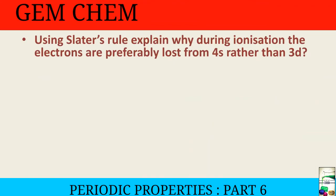Now here is a question: using Slater's rule, explain why during ionization electrons are preferably lost from 4s rather than 3d. We will work through this with nickel (Z = 28), which has the configuration [Ar] 3d⁸ 4s².